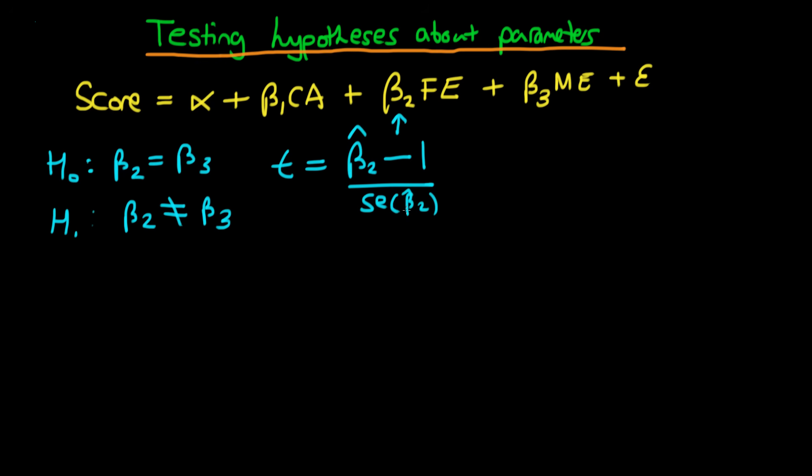That was fine when testing against just a number, but here the t-statistic takes on a slightly different form. The t-statistic equals β̂₂ minus β̂₃. The numerator is quite similar - we're just replacing 1 with our estimate of β₃. But the denominator is slightly different because whereas before we only had one random variable, β̂₂, here we actually have two random variables, β̂₂ and β̂₃.